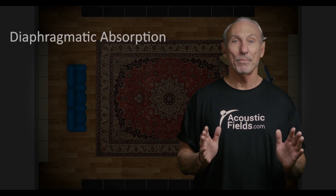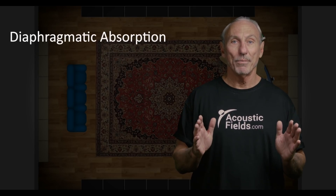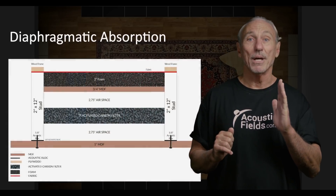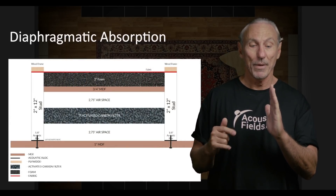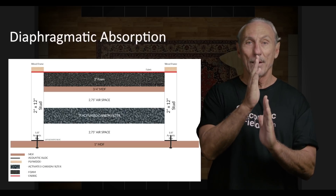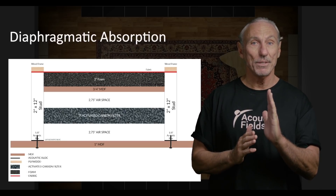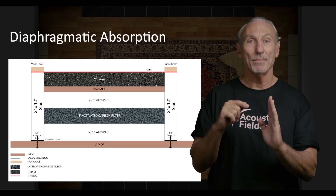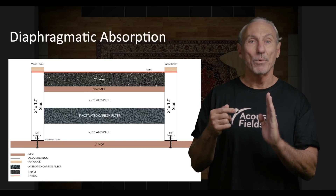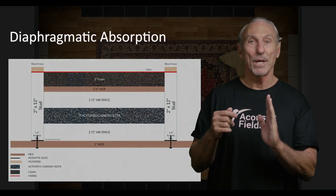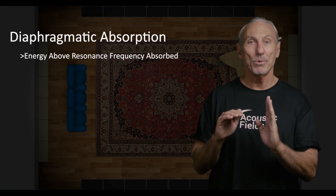How do we do that? Diaphragmatic absorption. What is diaphragmatic absorption? It is a diaphragm by definition, which is the front wall. It is a cabinet of certain density, and inside the cabinet is a fill material. The depth of the cabinet determines the resonant frequency at which the cabinet moves — it determines the cutoff point at which things are absorbed.